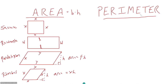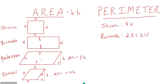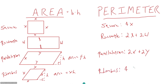Perimeter is just the length around your quadrilateral. For a square where all sides are the same, your perimeter is 4x. For a rectangle with two equal lengths and two equal widths, it's 2L plus 2W. For a parallelogram with sides x and y, it's 2x plus 2y. For a rhombus, just like a square, your perimeter is 4x because all sides are the same.